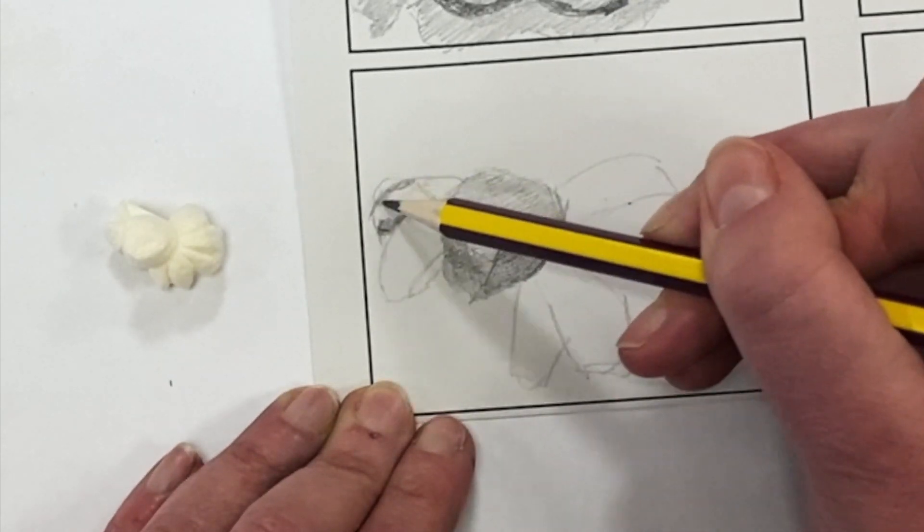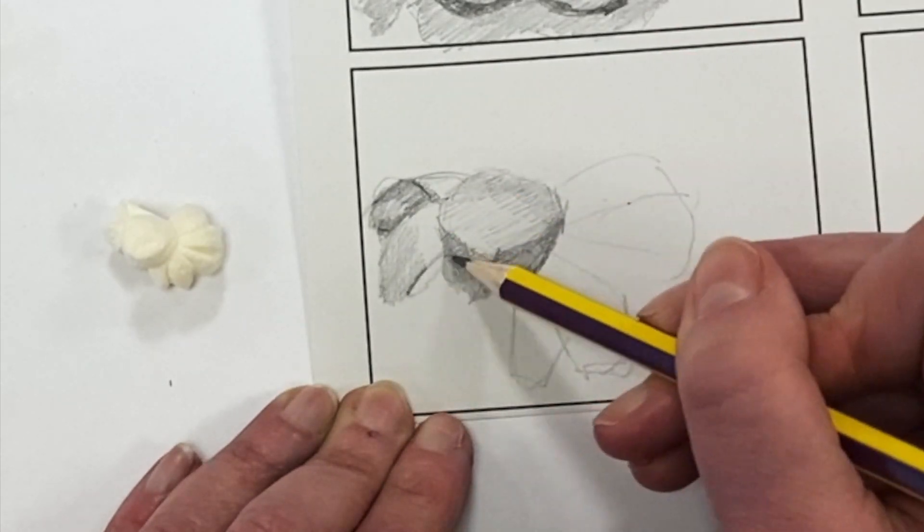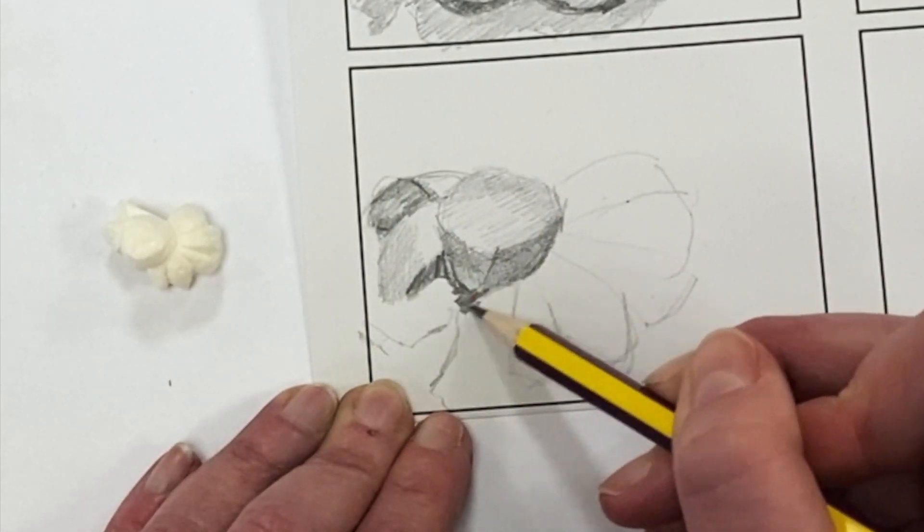So same process again. Light line. Then once you've blocked out the shapes, you're going to start putting the tone in.